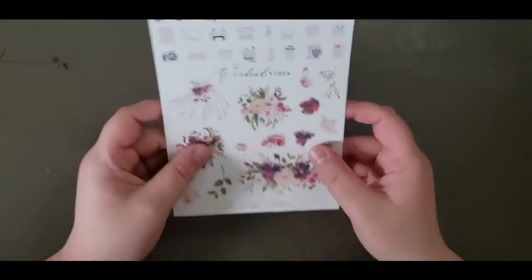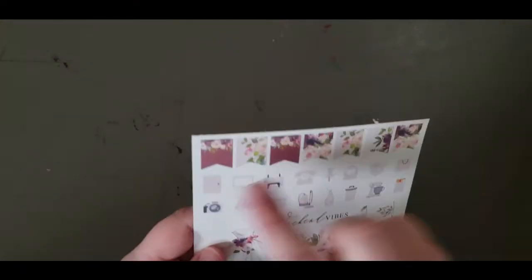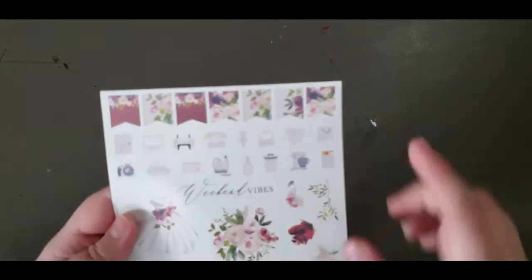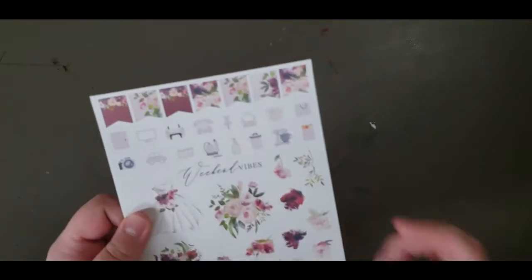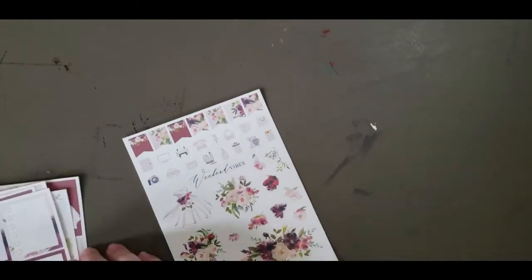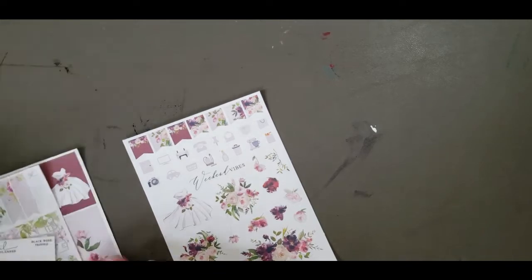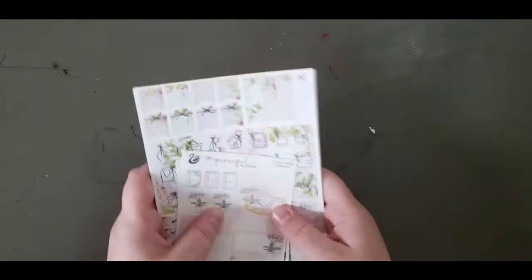And then we have the deco and icons. So there's some more flags at the top and a row of deco, a weekend banner that you could again layer over, and then some beautiful floral deco and that wedding dress. I really like this kit, like really really like it. I might save it for next fall but it's a really beautiful kit and I'm really happy to have it.